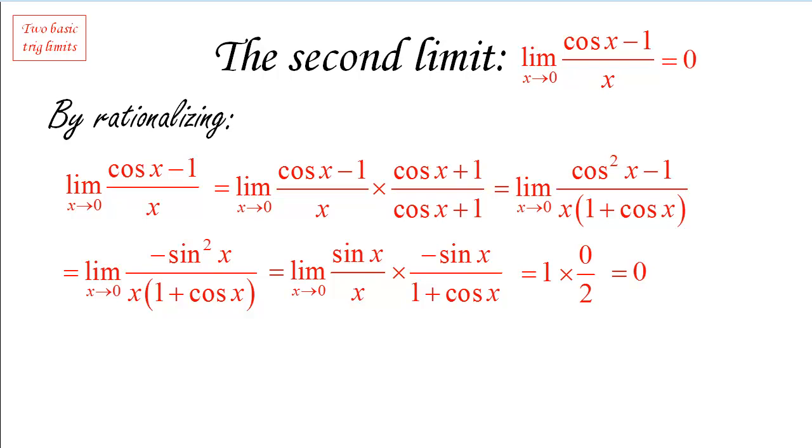Okay. So we can conclude that our limit is 0. And as I said, the important thing about this limit, or actually the two important things about this limit, is number one, the method to compute it, rationalizing, and number two, the fact that this limit will show up when we try to compute the derivatives of sine and cosine.